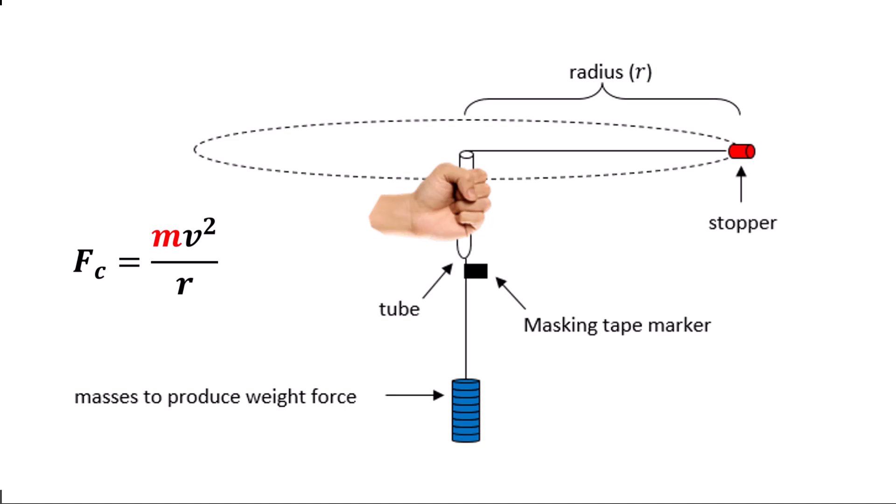The traditional circular motion equation is mv squared on r, where m is the mass of the rubber stopper that's been colored red. As that rotates around with a velocity at a fixed radius, it generates a centripetal force.